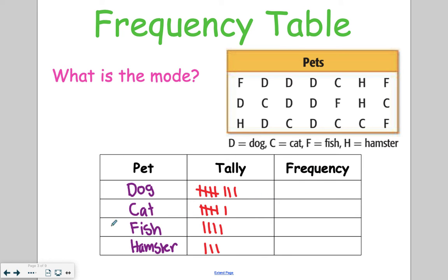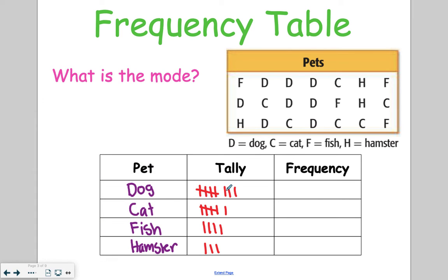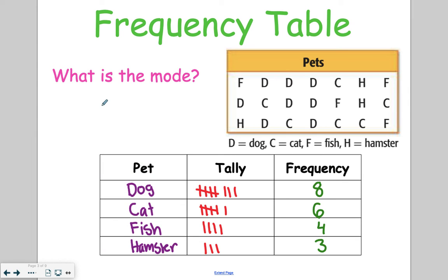And then over here, the frequency is simply counting up those tally marks. So we've got 5, 6, 7, 8. Cats have 6. Fish have 4. And hamsters have 3. Then to answer this question, it asks what is the mode of the data? That means you're looking for the one with the biggest frequency. So in this case, the mode would be dog.